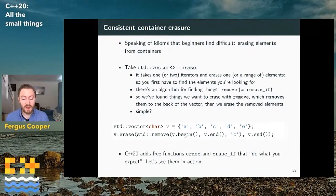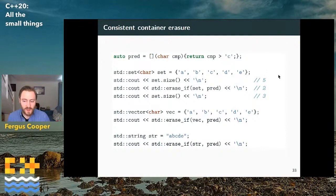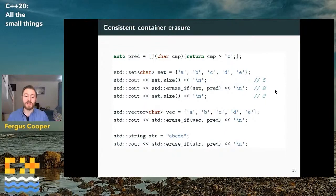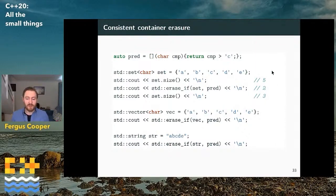C++20 adds free functions erase and erase_if that do what you expect. Here I've got a predicate that returns true if any character is greater than 'c'. With a set of {a, b, c, d, e}, I first print its size — 5. Then I do erase_if on that set with the predicate, and it prints 2, because erase_if tells you how many things were erased — potentially useful to know if anything was erased at all. The size of the set afterwards is indeed 3; d and e are actually gone. We don't have to do anything else — just one function call: erase_if with the container and predicate. And this is consistent: the same call works for a vector, and for a string too.